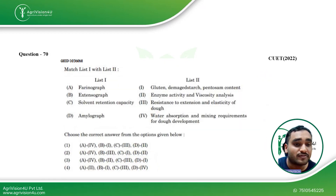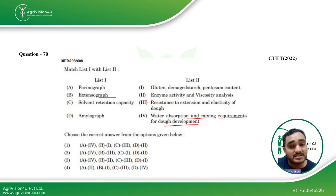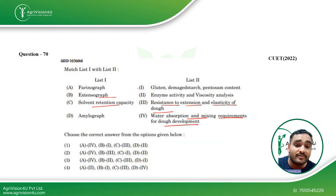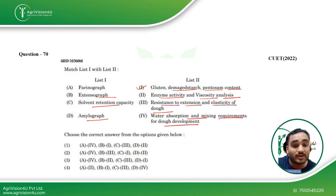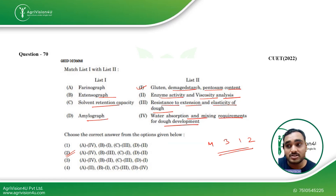The next question is from the wheat unit, matching instruments to their functions. Farinograph measures water absorption and mixing requirements for dough development. Extensograph measures resistance to extension and elasticity of dough. Solvent retention capacity measures gluten, damaged starch, and pentosan content. Amylograph measures enzyme activity and viscosity. The correct sequence is 4, 3, 1, 2 — making option B, the second option, the correct answer.